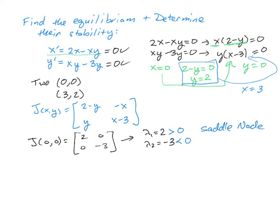We now calculate the second Jacobian. So that's the Jacobian at 3, 2. We substitute that, and that's going to give us 2 minus 2, which is 0, then negative x, which is negative 3, and then we're going to have y, which is 2, and then we're going to have x minus 3, which is 0. Now this is not a diagonal matrix because zeros are on the main diagonal.